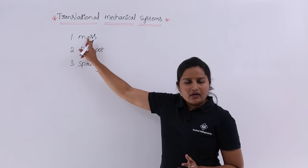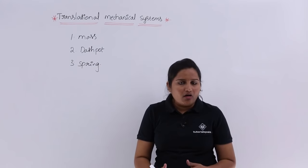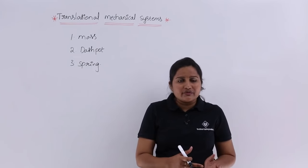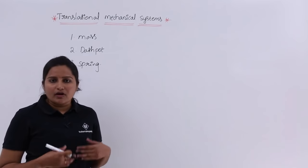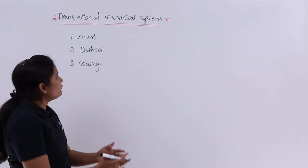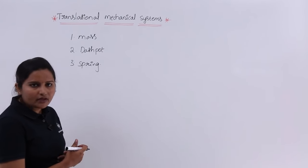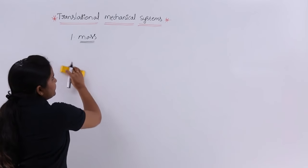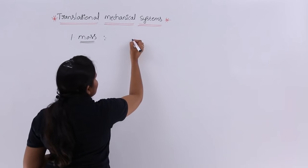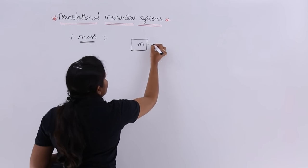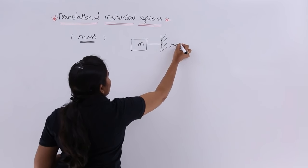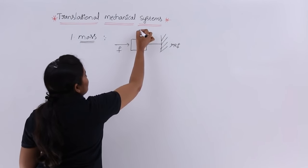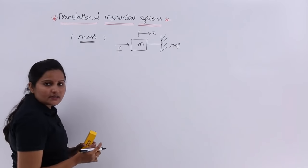When we apply any force on a body or mass, which stores kinetic energy, we get some opposing force called AFM. We will examine one by one: the force on mass, the force on dashpot, and the force on spring. Consider a mass M fixed on one side as a reference. We apply a force F, and the displacement is in the same direction as the force.